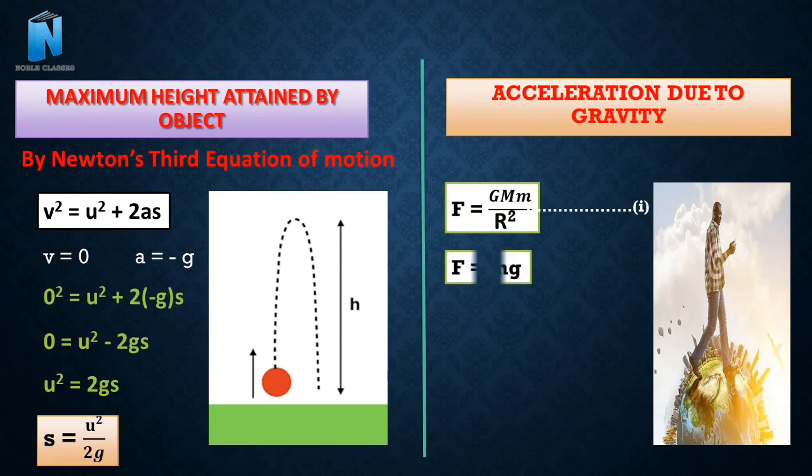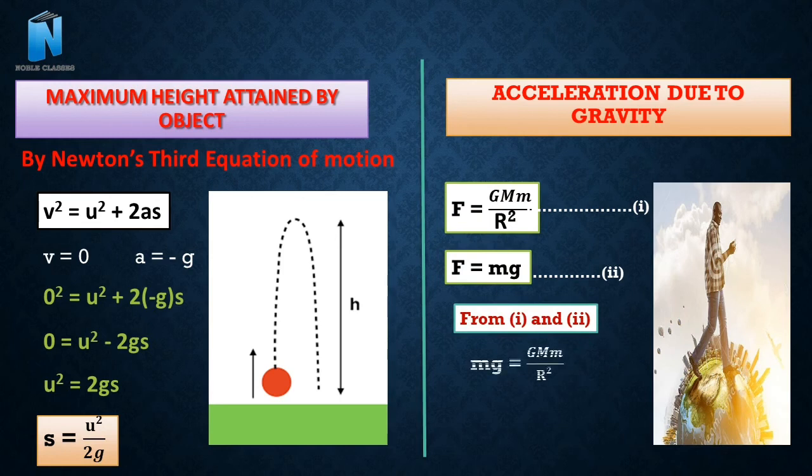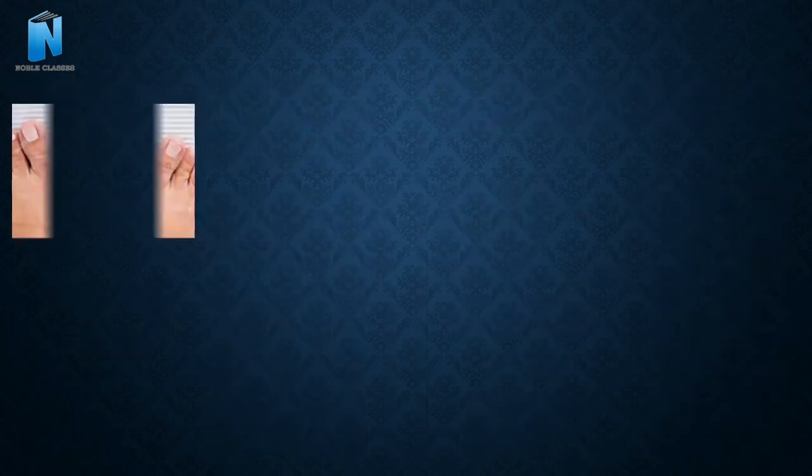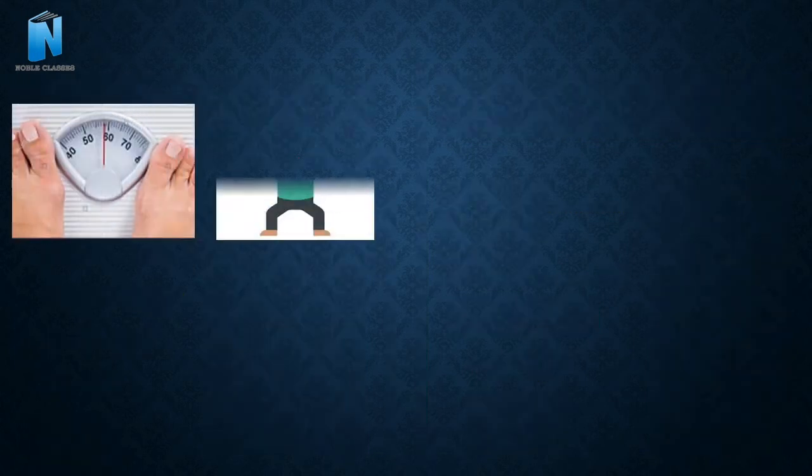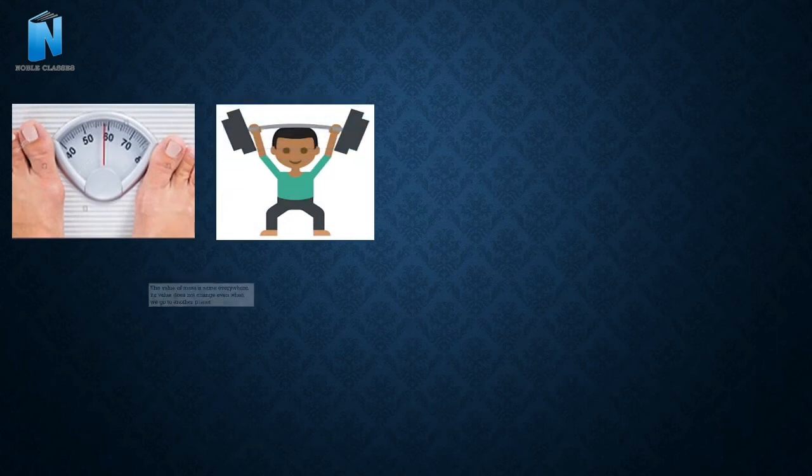Acceleration due to gravity, the formula can be derived as F is equal to G M M upon R square and the second will be F is equal to M G. Equating 1 and 2, we will get G is equal to G M upon R square. This is the formula for acceleration due to gravity. We can see from this it is not depend on mass. It is depend on the mass of the planet.